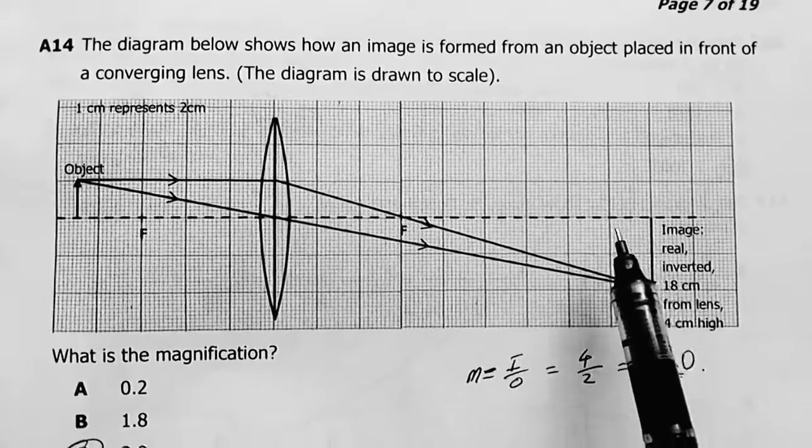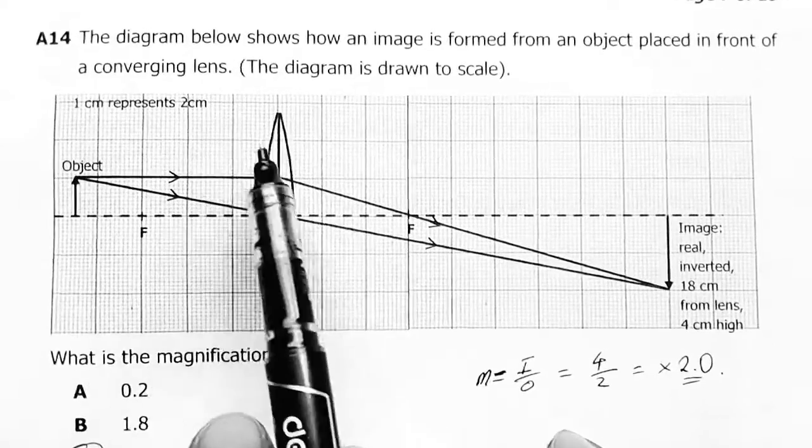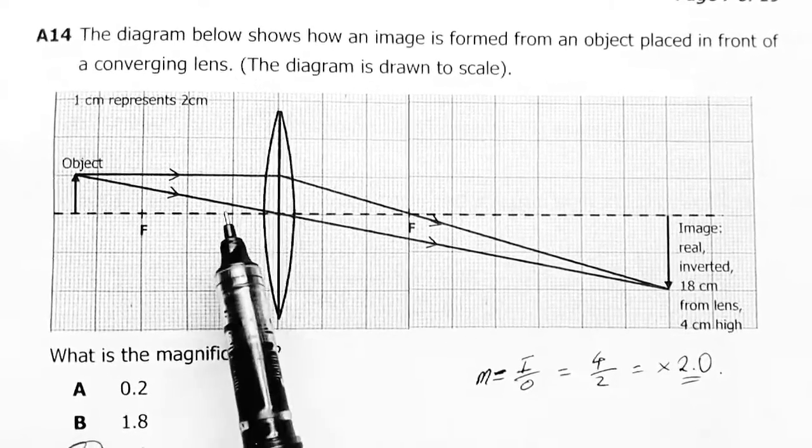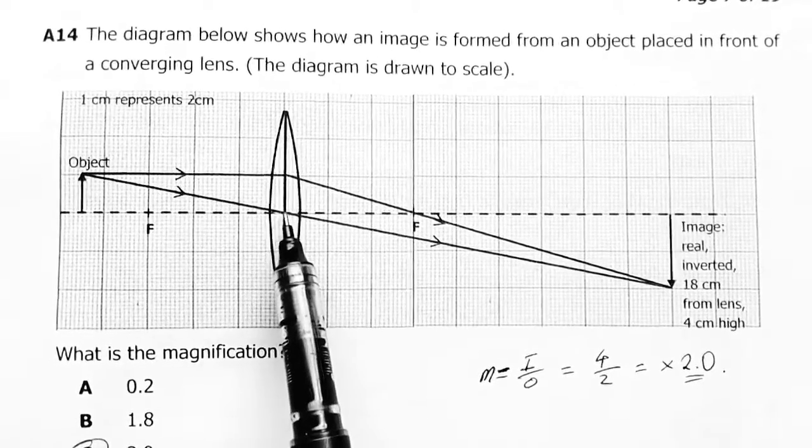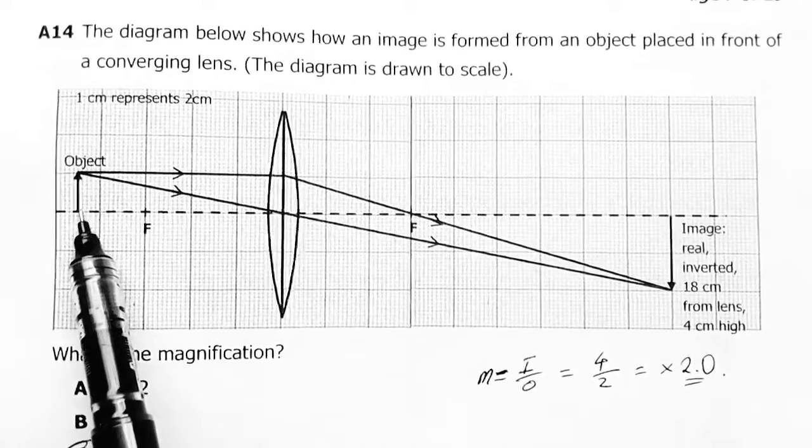You simply divide the distance of the image from the lens, which is 18 centimeters, because these are simply 9 centimeters. And since one centimeter represents two centimeters, this is 18 centimeters. And then this one is 4.5 from the center of the optic center: one, two, three, four and a half.